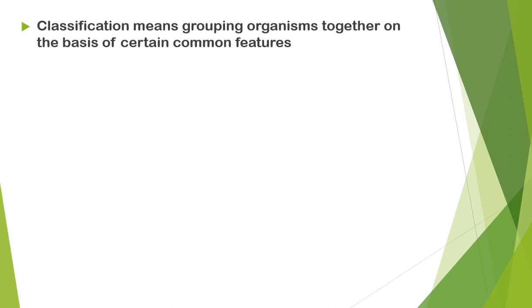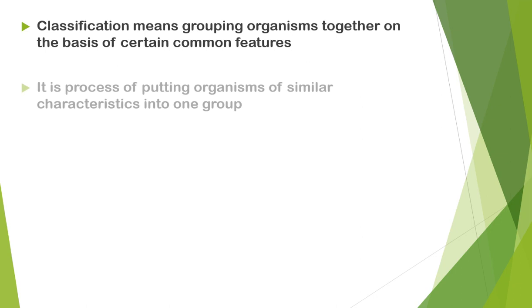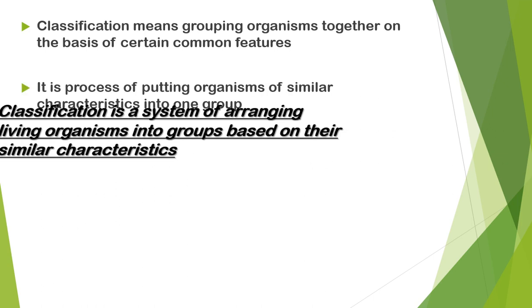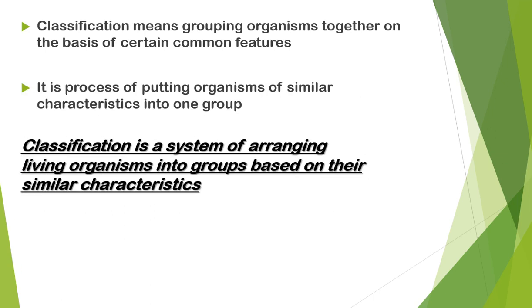Classification means grouping of organisms together on the basis of certain common features. It is the process of putting organisms of similar characteristics into one group — a system of arranging living organisms into groups based on their similar characteristics.